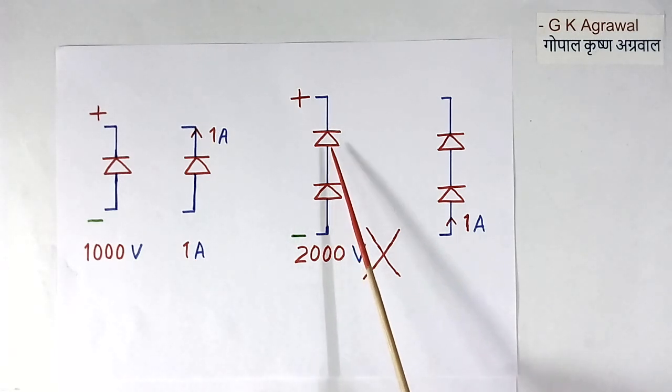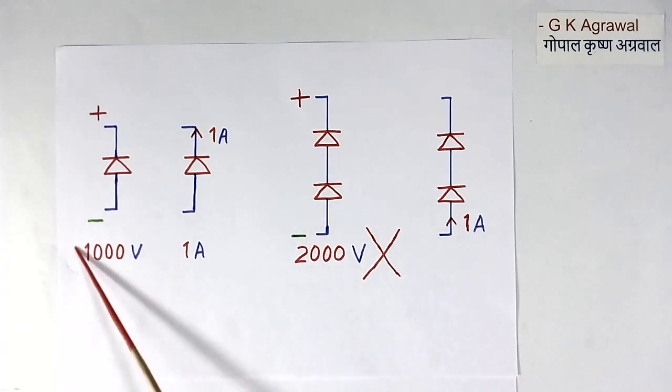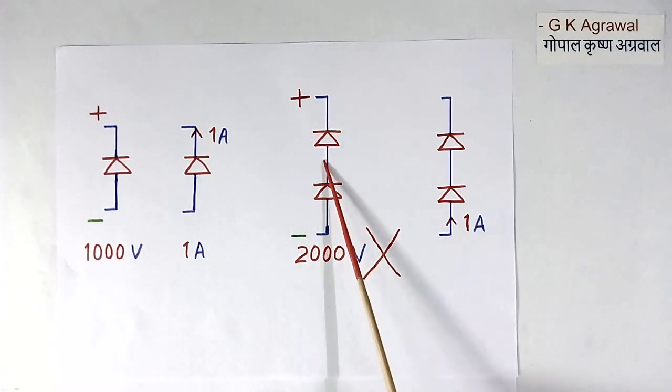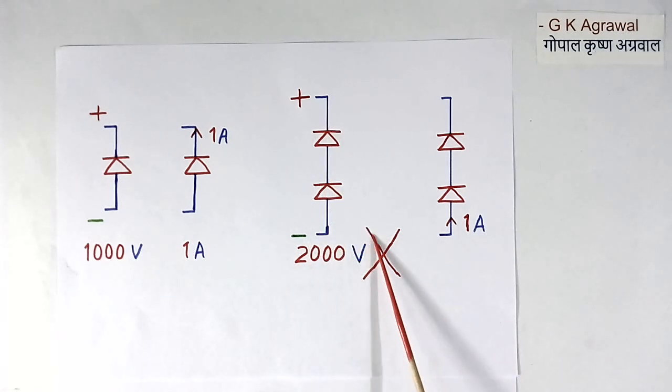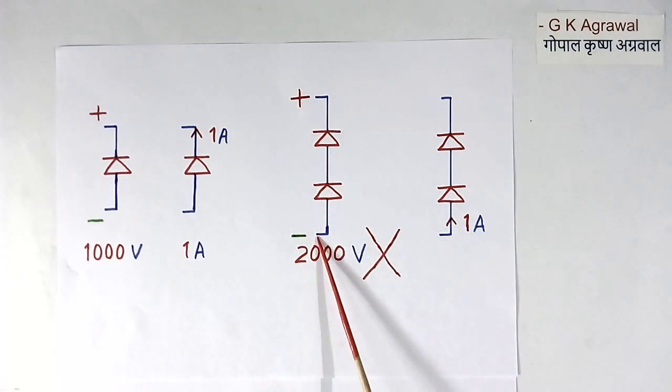Here, I have connected 2 diodes in series. Now 1 diode can take 1000 volt in reverse. Then 2 diodes should take 2000 volt. No, this is wrong. When 2 diodes are connected in series, total voltage taking capability will not be double. It will be much less.